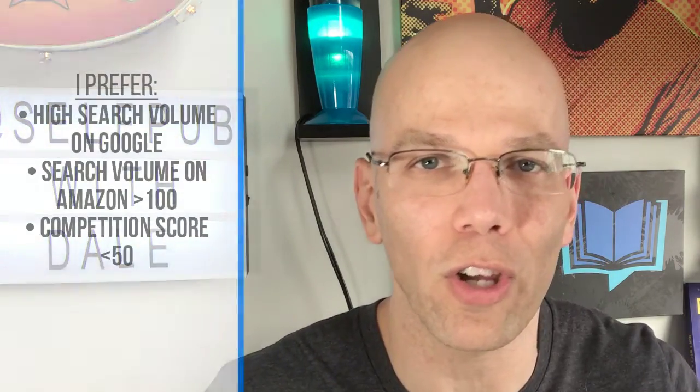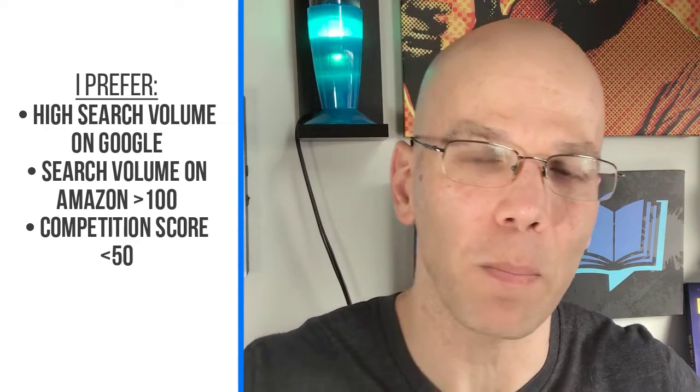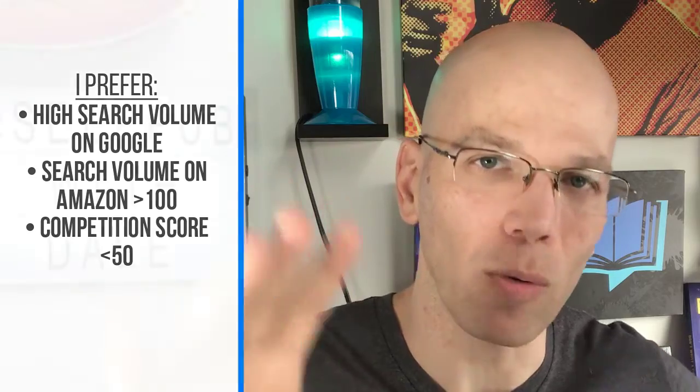A lot of people ask me where their competitive score should be. It's going to be dependent on your comfort level and the risk versus reward. I generally like seeing keywords with a great search volume on Google as well as on Amazon — above 100 in search volume per month — and a competitive score below 50. Despite all of Amazon's changes over the past couple of years, the Publisher Rocket team is always addressing issues with it, and that means a lot to me. The support team has been stellar, and Dave Chesson himself has been very public about sharing a lot of information. In fact, some of the information I've shared with you I actually got from Dave Chesson.